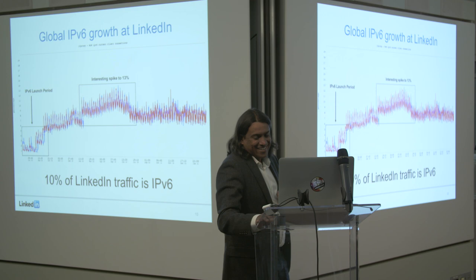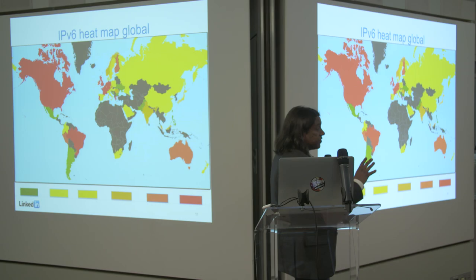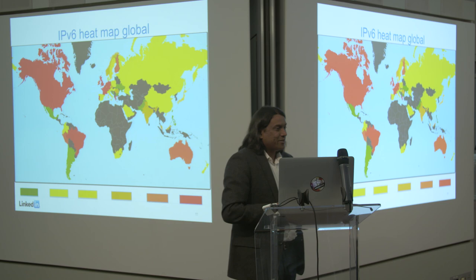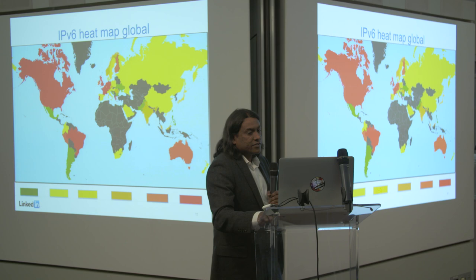All that RUM stuff I was talking about — I wanted to show an interesting visualization of a heat map we can produce out of that. The reds are where v6 is really hot, and greens are places that really need a lot more adoption. I think Australia is really close to red in my opinion, but we'll get there. That's how it looks on a global scale. Europe looks really nice.